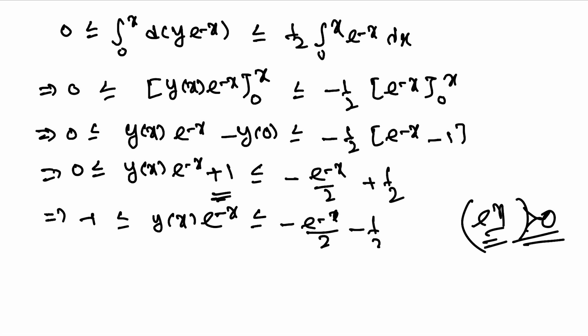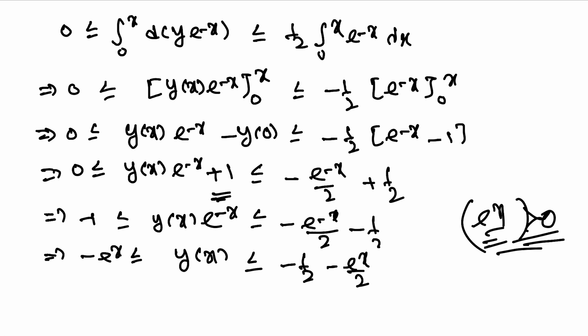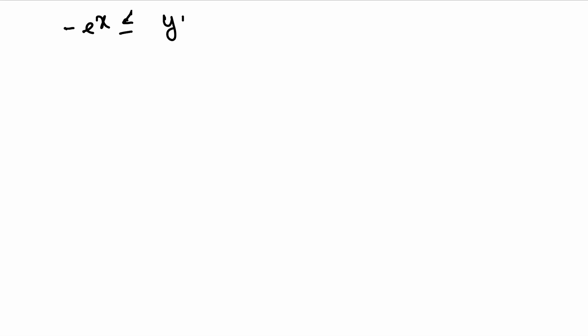Multiplying every side by e^x (which is > 0 for all x), we get: -e^x ≤ y(x) ≤ (-e^x + 1)/2. So y(x) is bounded between -e^x and (-e^x + 1)/2. As x → ∞, both bounds go to -∞, so by the sandwich theorem y(x) → -∞ as x → ∞.